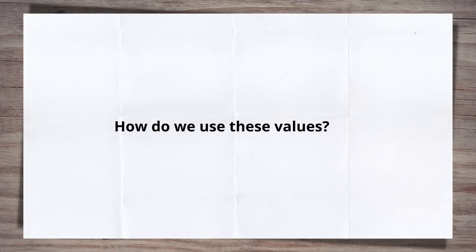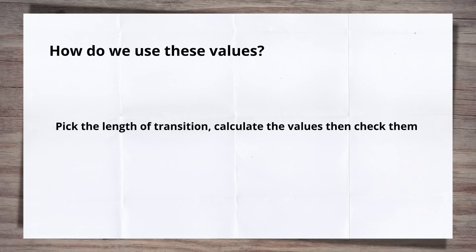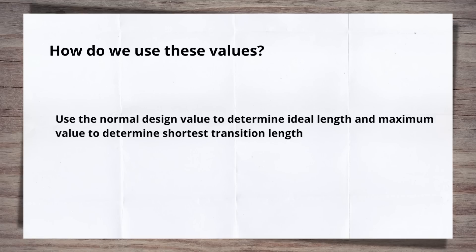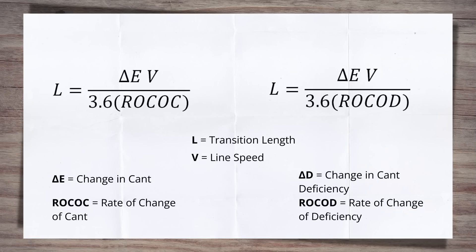So how do we use these values? There are two main approaches. Firstly, you can pick a length of transition, then calculate the rates of change and check them against the standard. This would be the way you would likely approach it if you were checking a design. But if you're a designer and you don't want to have to go through the trial and error of picking different transition lengths, what do you do? You can use the normal values to determine an ideal or desirable length, or use the maximum values to determine the shortest transition you can use. So let's look at the equations that are the key to all of this.